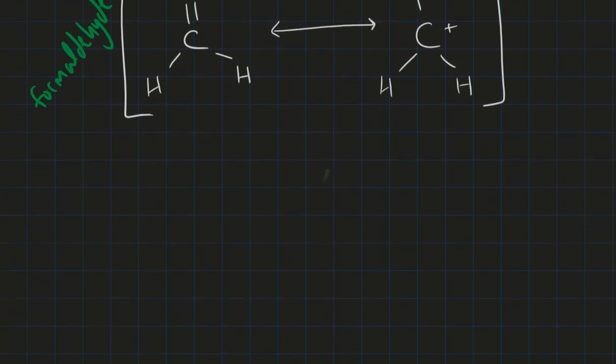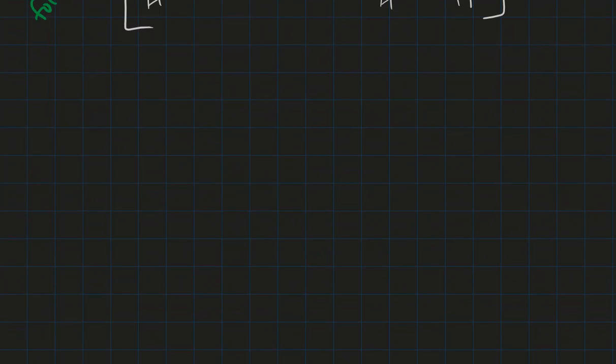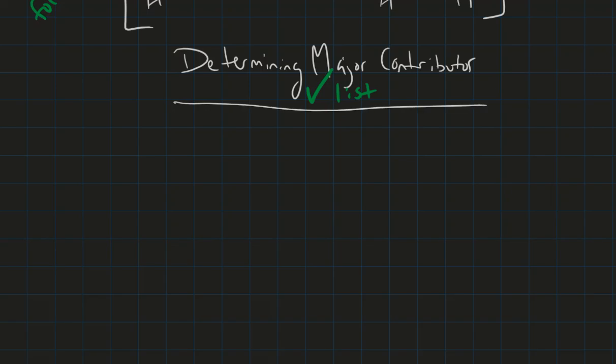So we have a checklist that we want to go through. We're going to call this our determining major contributor checklist. Our first step is which one has the most octets.